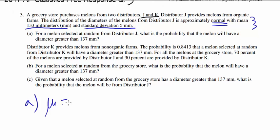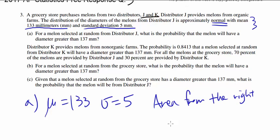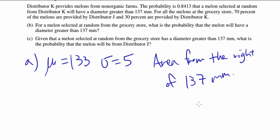This is easy to do. We know mean is 133, standard deviation is 5. So all we want to find is the area from the right of what? Right of 137.